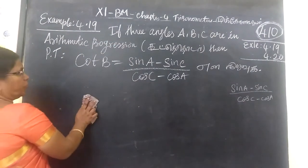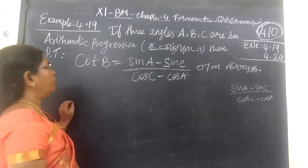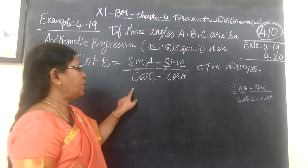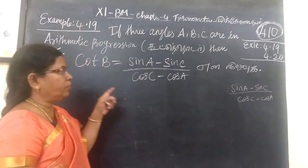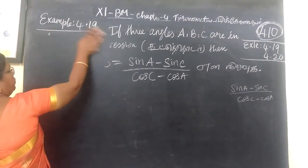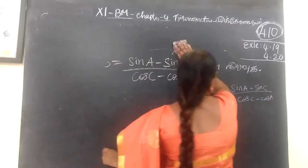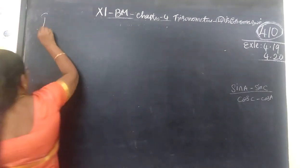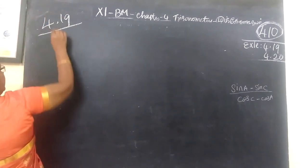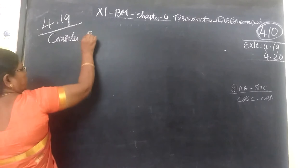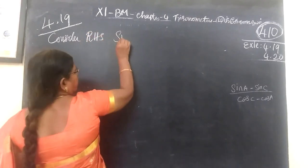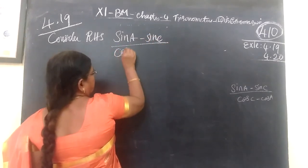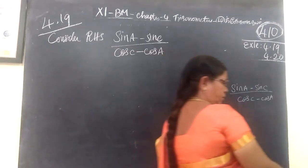Example 4.19. We are given: if three angles A, B, C are in arithmetic progression, prove that one of them is equal to sin A minus sin C divided by cos C minus cos A. Now we will consider the RHS: sin A minus sin C by cos C minus cos A.